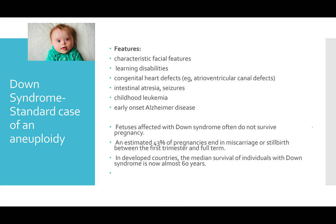Down syndrome involves facial abnormalities, learning difficulties, and structural defects — commonly AV canal defects, VSDs, intestinal atresia, epilepsy-like features, childhood leukemias, and early-onset Alzheimer's disease and dementia. Majority of trisomy 21 pregnancies will not survive to delivery — about 40 percent end in miscarriage, mostly in the first trimester. In developed countries patients can live up to 60 years; in our setting rarely beyond 50.